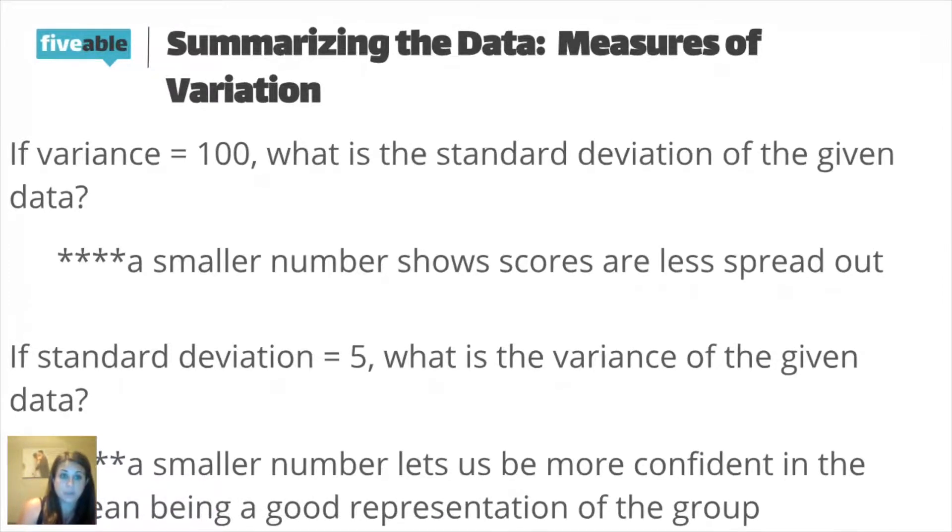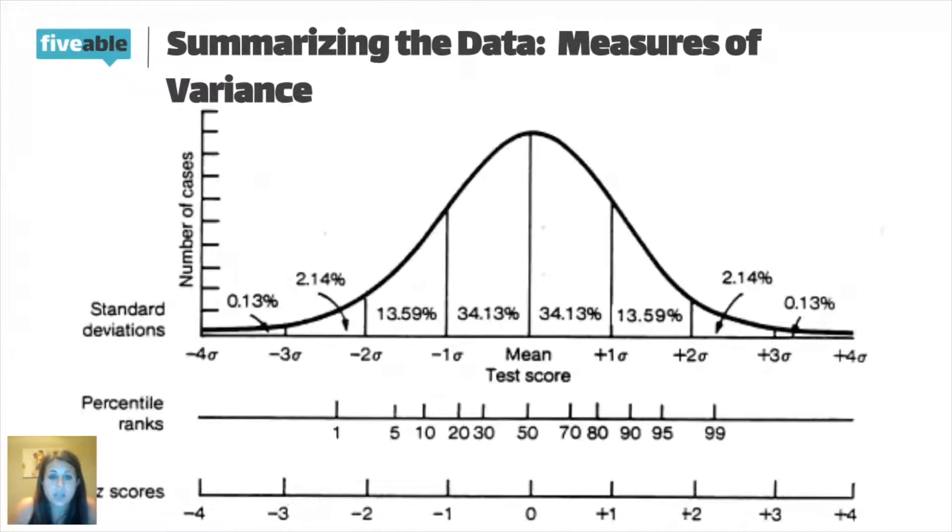It could go the opposite way, too. It could give you standard deviation is 5, and then ask you what's the variance. And then so you would just square it. So 5 squared is 25 would be the variance. We like to see small numbers here because that means then that our data is closer to the mean. And then we know that the mean is a good representation. So this kind of links back to what we talked about with central tendency. If our standard deviation is a small number, that means most of the scores then are situated around the mean, which means that the average is a good statistical measure of the group.